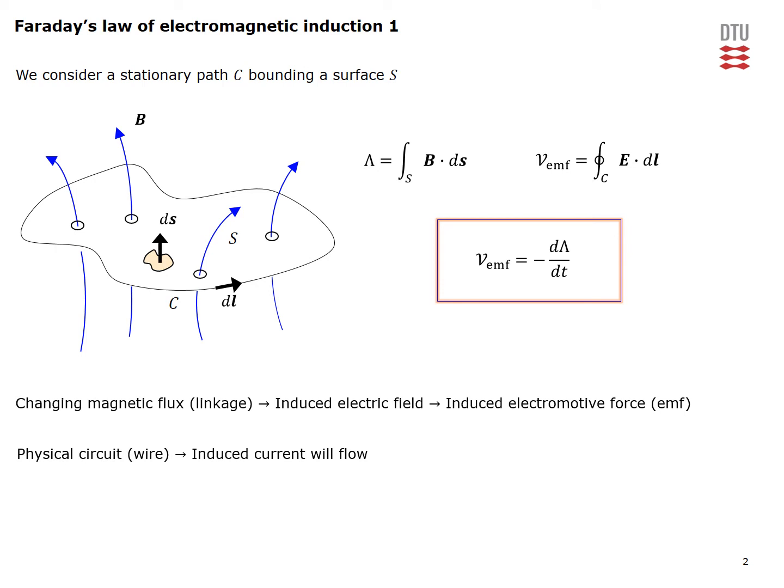If you place a physical circuit like a wire along this path, the induced field will cause an induced current to flow along the wire. The interesting question is what will be the direction of this induced current. This direction is always governed by the negative sign in Faraday's law of induction. The induced current will flow in such a direction that the flux it produces tends to cancel or oppose the change in the original flux — not the flux itself.